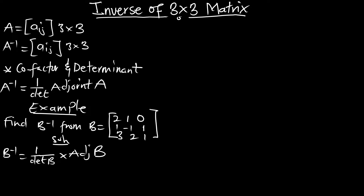Here we are going to find the determinant of B. I would prefer to use the third row to find the determinant. That would be delta of matrix B. Comparing it to the positive sign pattern, I'm going to use this third row approach.